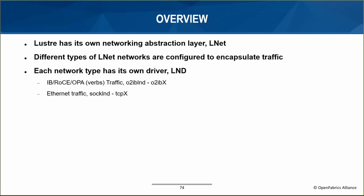LNet is in essence a networking abstraction layer. It provides a way to configure virtual networks and assign different interfaces, either via their names or IP addresses, to these virtual networks. It supports different fabrics including IB, OmniPath, Ethernet, and others. Below LNet, a further abstraction layer termed LND, or Lustre Networking Driver, implements the fabric-specific protocol. For example, the o2iblnd uses the verbs kernel API to send LNet messages over IB, OmniPath, or RoCE fabrics, while the socklnd uses kernel socket APIs to send traffic over Ethernet.